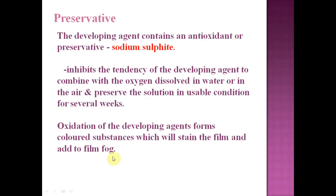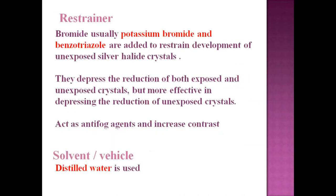Oxidation of the developing agents forms colored substances which stain the film and add to film fog. The restrainer — usually bromide compounds such as potassium bromide and benzotriazole — is added to restrain the development of unexposed silver halide crystals. They depress the reduction of both exposed and unexposed crystals but are more effective in depressing the unexposed ones, acting as an anti-fog agent and increasing contrast. Distilled water serves as the solvent.